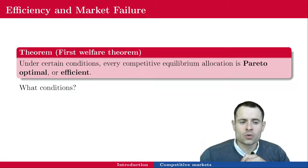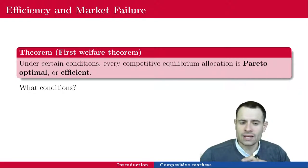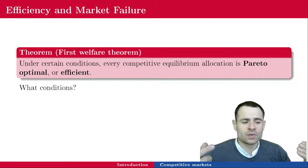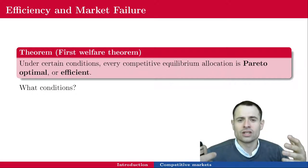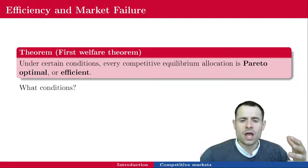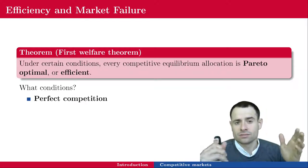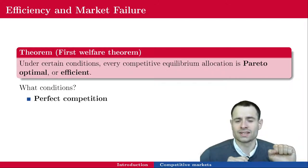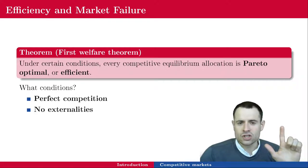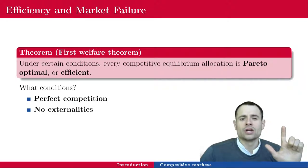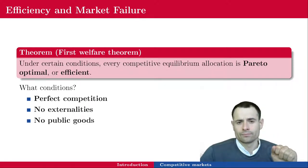The first welfare theorem is one of the most fundamental results in economics. It says that under certain conditions, every competitive equilibrium allocation is Pareto optimal or efficient — which is why we study perfect competition so much. It gives us a benchmark on what's efficient. It is not very realistic, but then we can start violating the conditions for perfect competition and look at the impact on the equilibrium. The conditions are: perfect competition, no externalities, and no public goods — no goods which are non-rival and non-excludable.